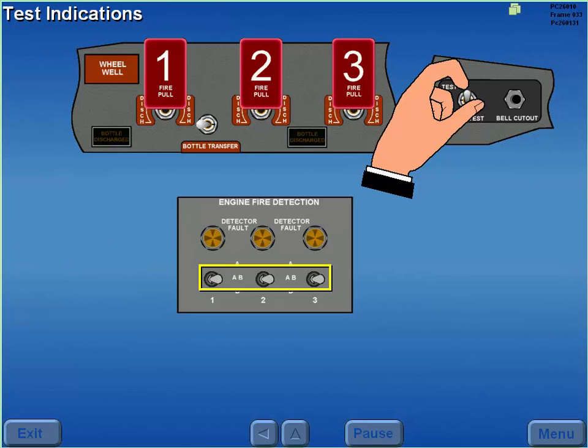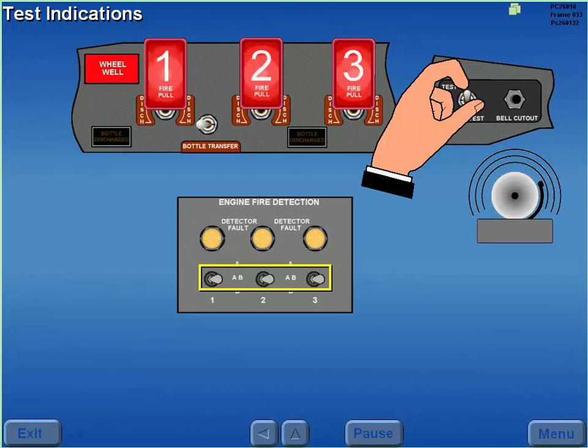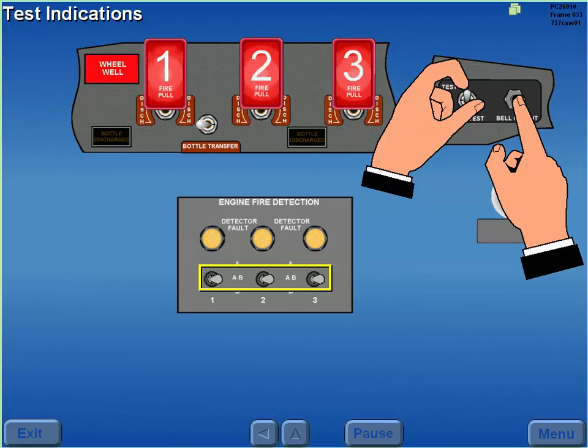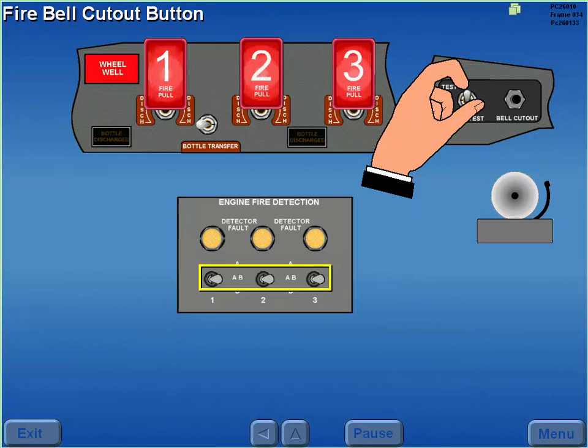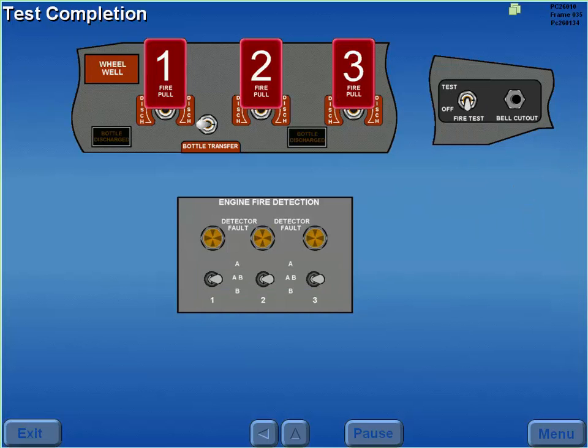If the continuity of the elements is intact, the fire handle and detector fault lights illuminate and the fire bell sounds. Pressing the fire bell cutout button silences the fire bell. However, the lights remain illuminated. The test switch returns to off when released and the warning lights extinguish.